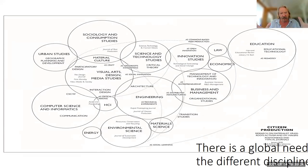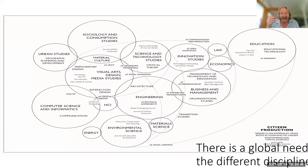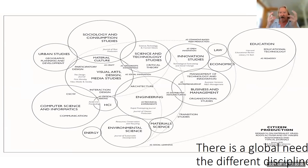Researchers have studied many journals showing that Fab Lab has transition studies and social learning. There are many important journals and domains involved: urban studies for Fab City, computer science, informatics, energy, business and management, engineering, visual arts, design, and media studies. You need to make sense of all these domains and create a structural dialogue between people coming from so many areas of science when you're building a city.